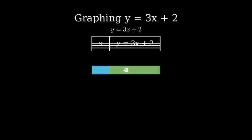For x equals 0: 3 times 0 plus 2 equals 0 plus 2 equals 2. For x equals 1: 3 times 1 plus 2 equals 3 plus 2 equals 5. And finally,